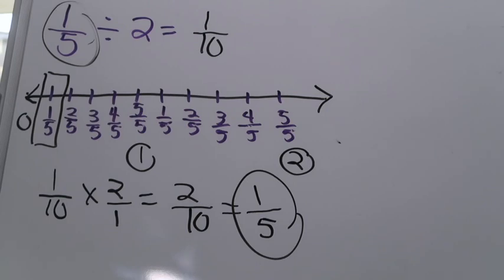Those are your two examples. One was dividing a whole number by a fraction; the second was dividing a fraction by a whole number. Both parts of each type of problem tell you what to do with your number line. The whole number tells you how far out your number line is going to go — if two is your whole number, your number line goes from zero to two; if three is your whole number, it goes from zero to three.